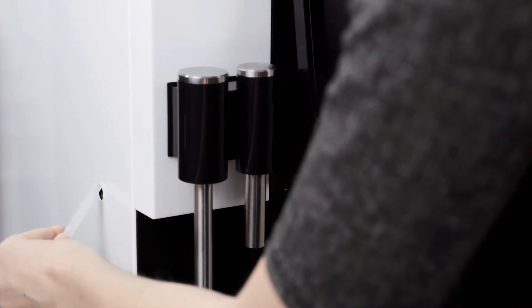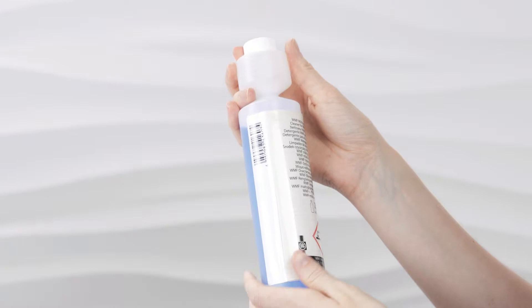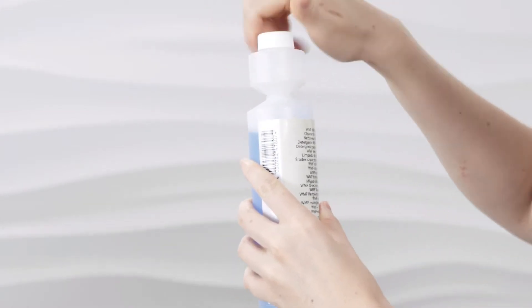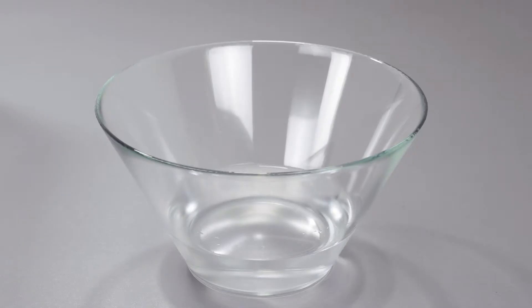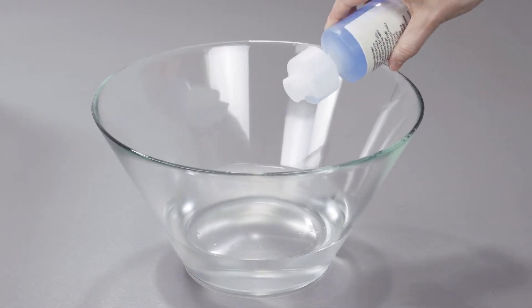To prepare the cleaning solution you will need the WMF special cleaner for milk foamers supplied. The special cleaner has a dosing device. To measure out a dose, open the bottle and squeeze gently to fill the dosing device with 5 milliliters. Add the special cleaner to half a liter of warm water.